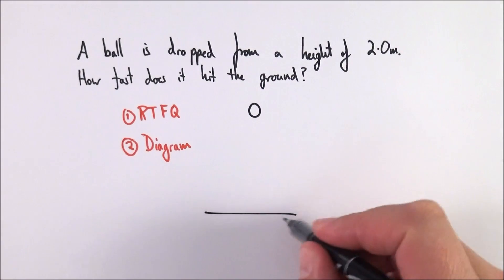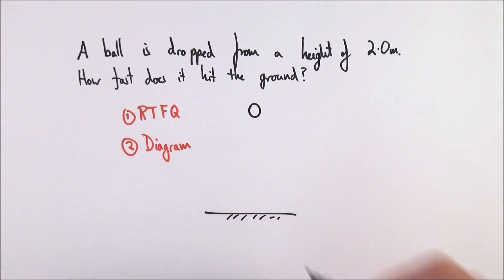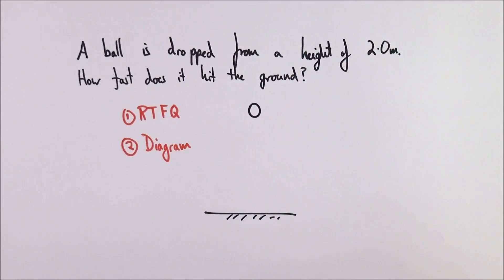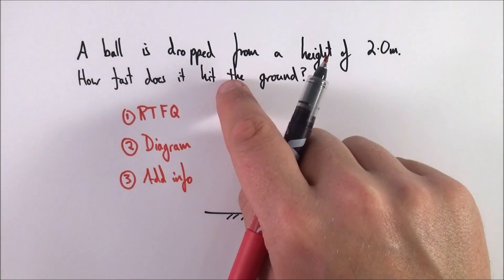My diagram does not need to be perfect, it just needs to be something that I understand. Here's my ball and here's the ground underneath it. What I can then do on my diagram is I can start to add information from within the question.